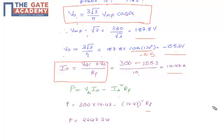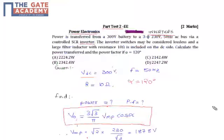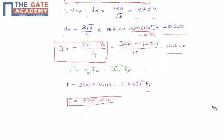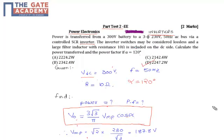After solving, we get P = 2247.2 watts, which is the power transferred. This corresponds to option D. In this session, we studied how to calculate the power transferred. Thank you.